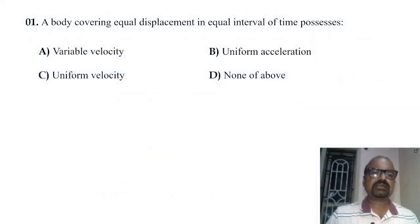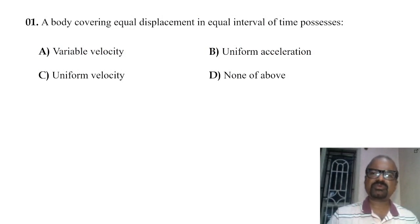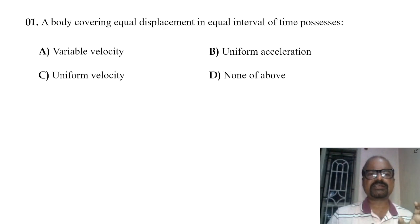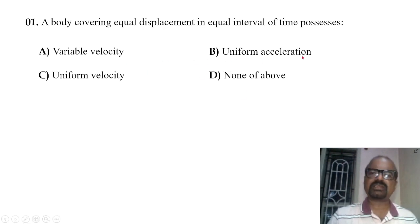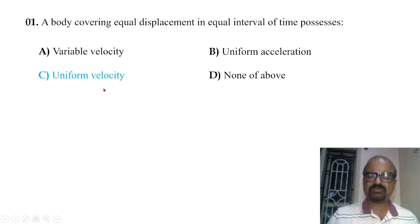A body covering equal displacement in equal interval of time possesses uniform velocity. It covers equal displacement in equal interval of time — not variable velocity or uniform acceleration, but uniform velocity.